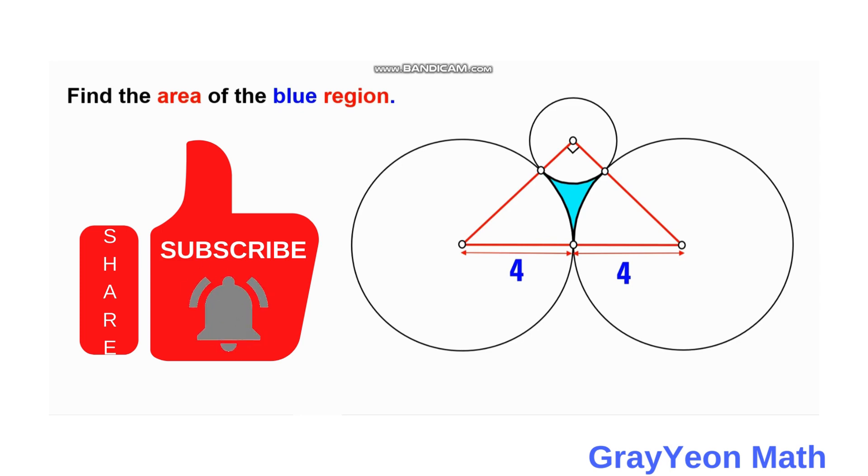Welcome to GrayYeon Math. We are asked to solve this problem. We have three circles that are mutually tangent to each other, and the lines drawn from the centers form a right triangle.